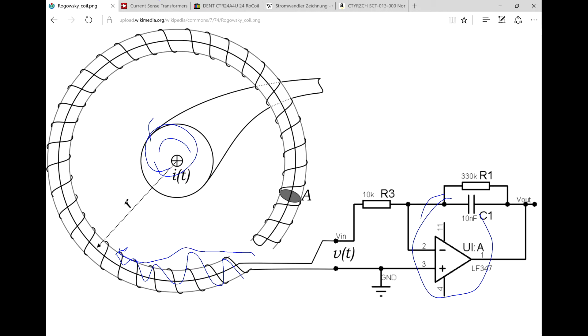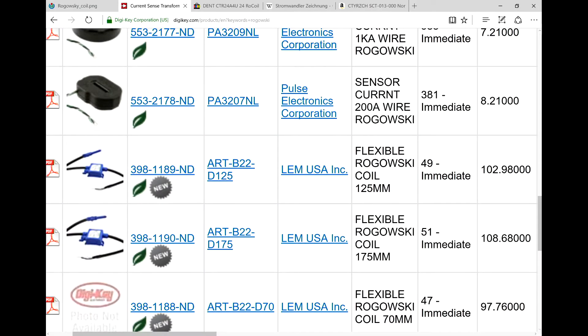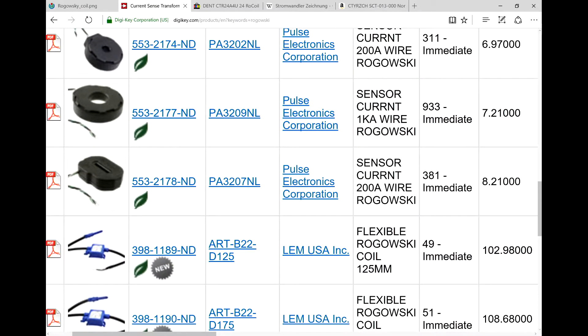There are cheaper options like the, what do we have here? Basic current sense transformers. And what that is, those are like $7, right? So not too bad. Like in here for this one.